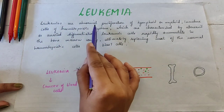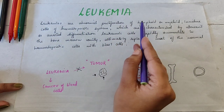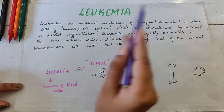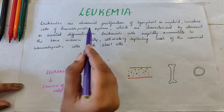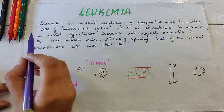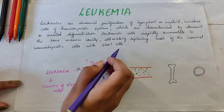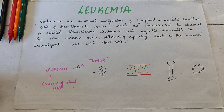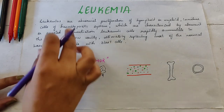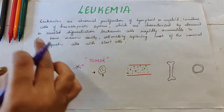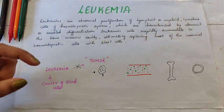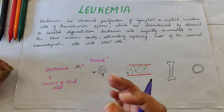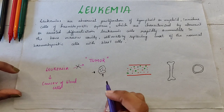Leukemias are abnormal proliferation of lymphoid or myeloid immature cells of the hematopoietic system. I will explain what this actually means — this is the gist of leukemia, and one by one we will understand what it actually means. So let's start.